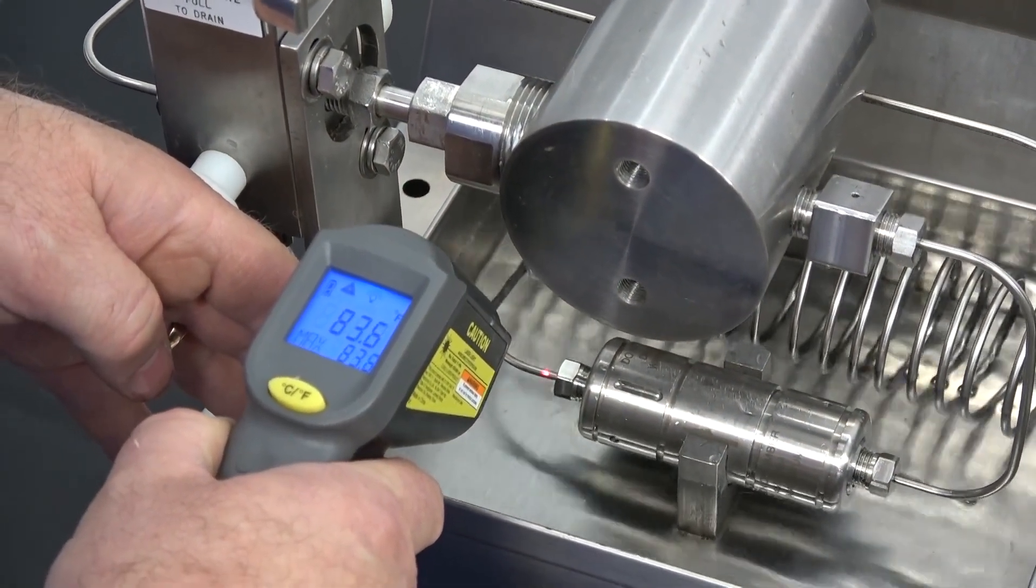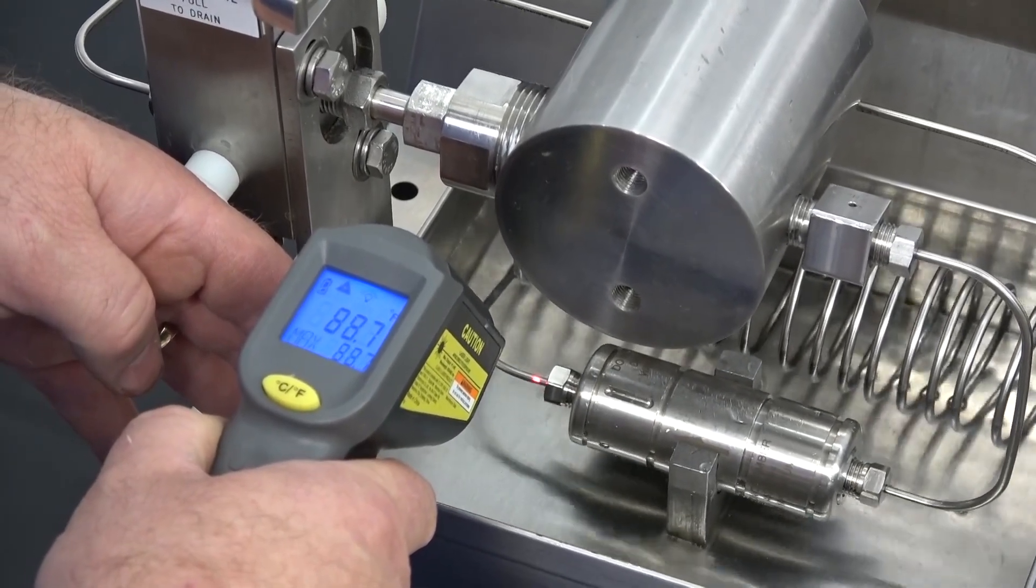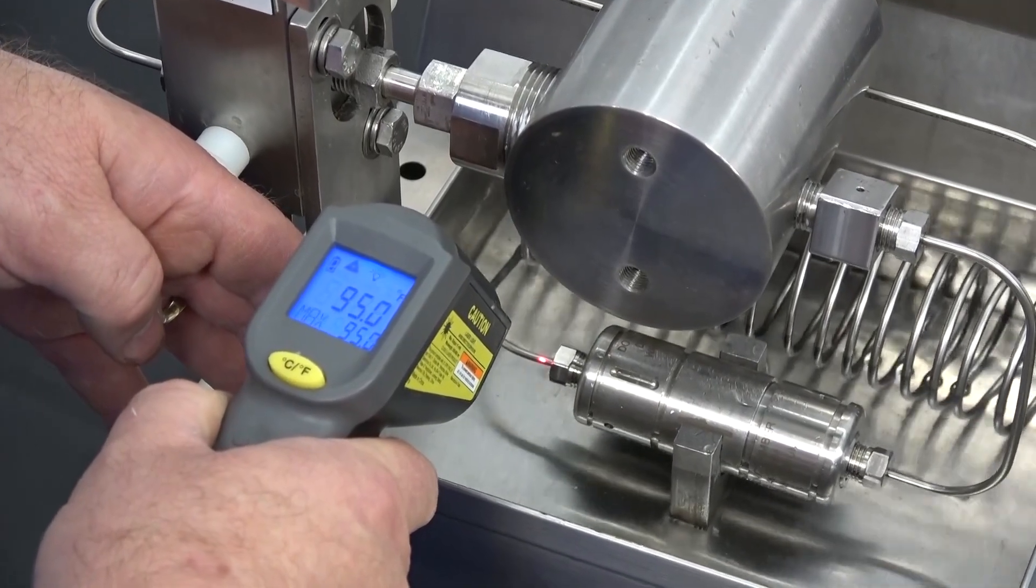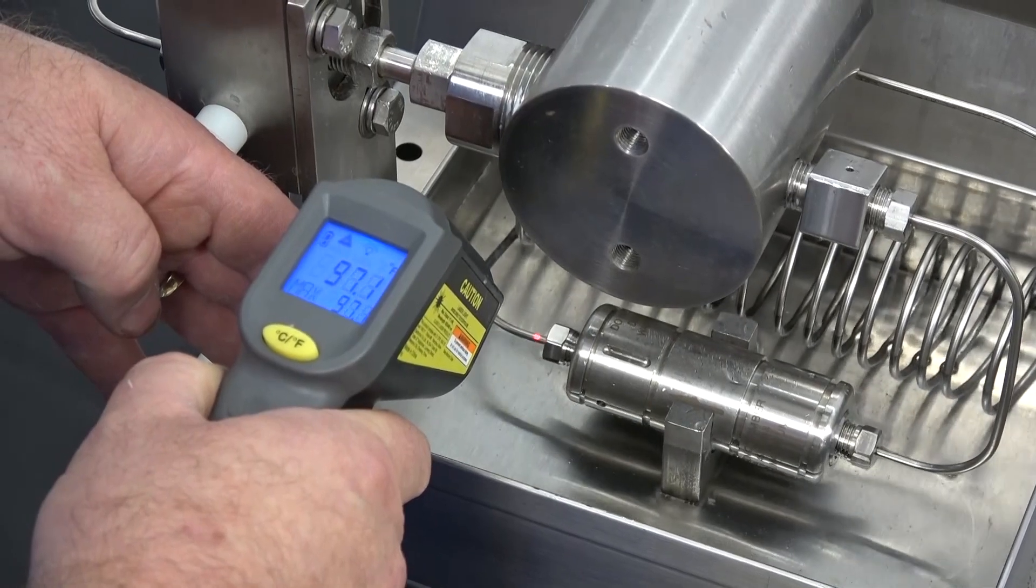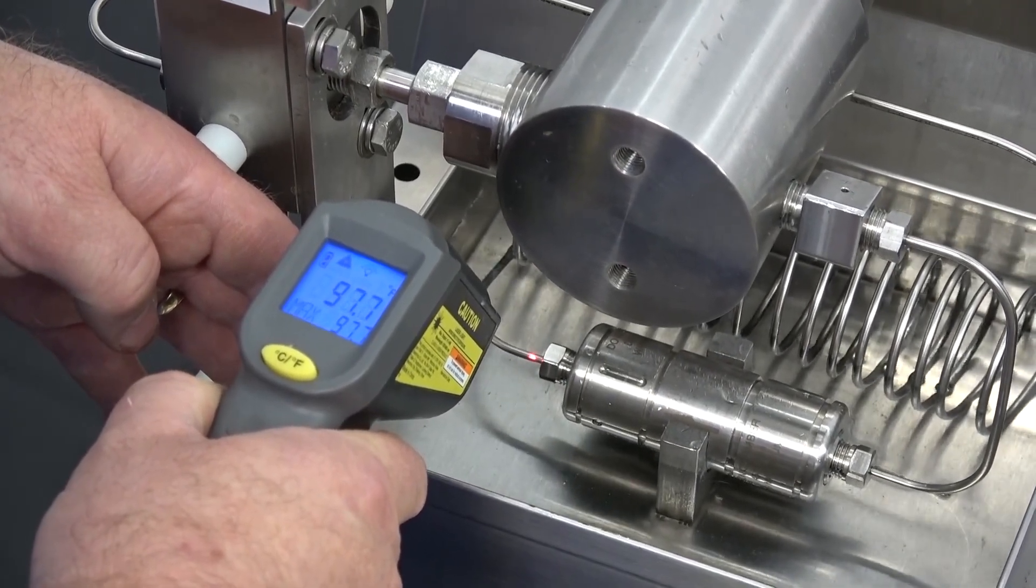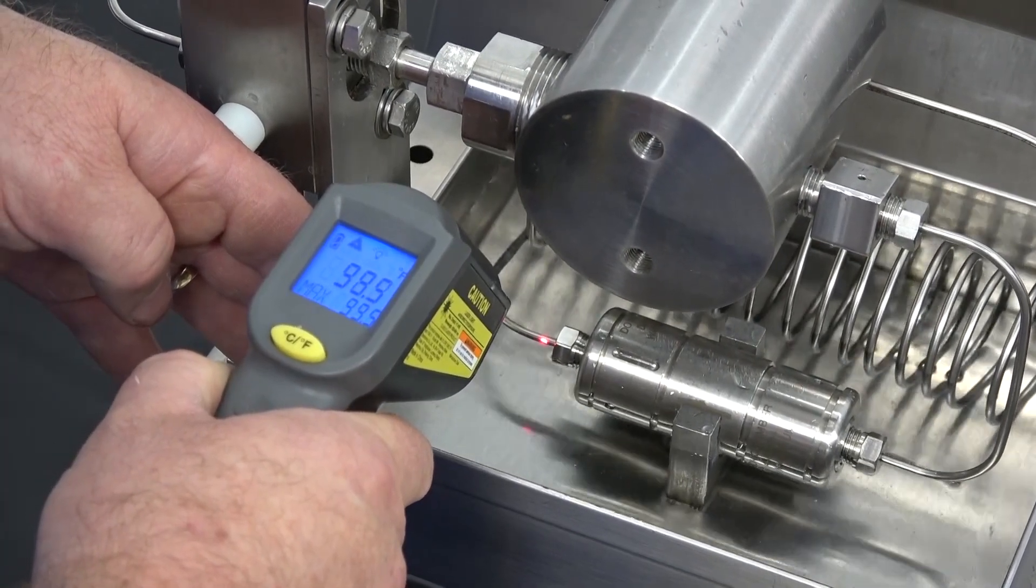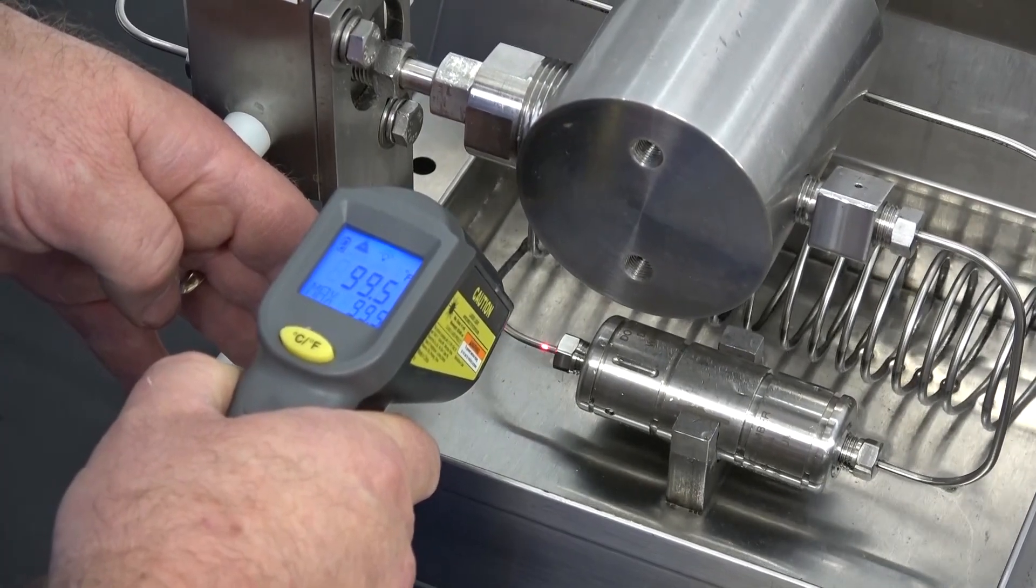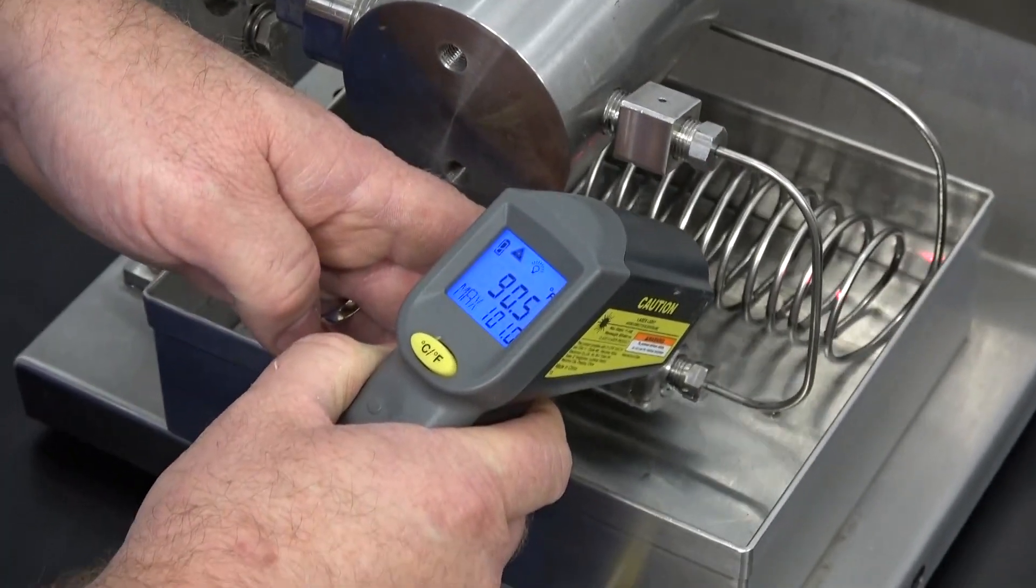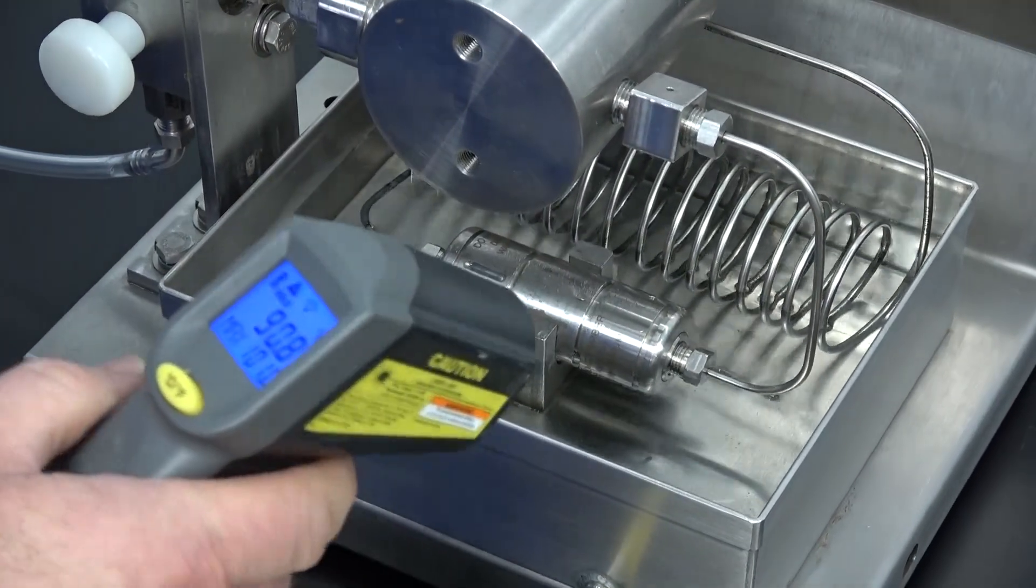And you can just see how the temperature is climbing there. Almost 100 degrees Fahrenheit there. And then we can come over on the cooling coil at this end here where it's coming out. You can tell it's only 90 degrees there. So it's definitely cooling it as it goes through the cooling coil. So that's why you need that cooling coil whenever you're actually running the fluidics.